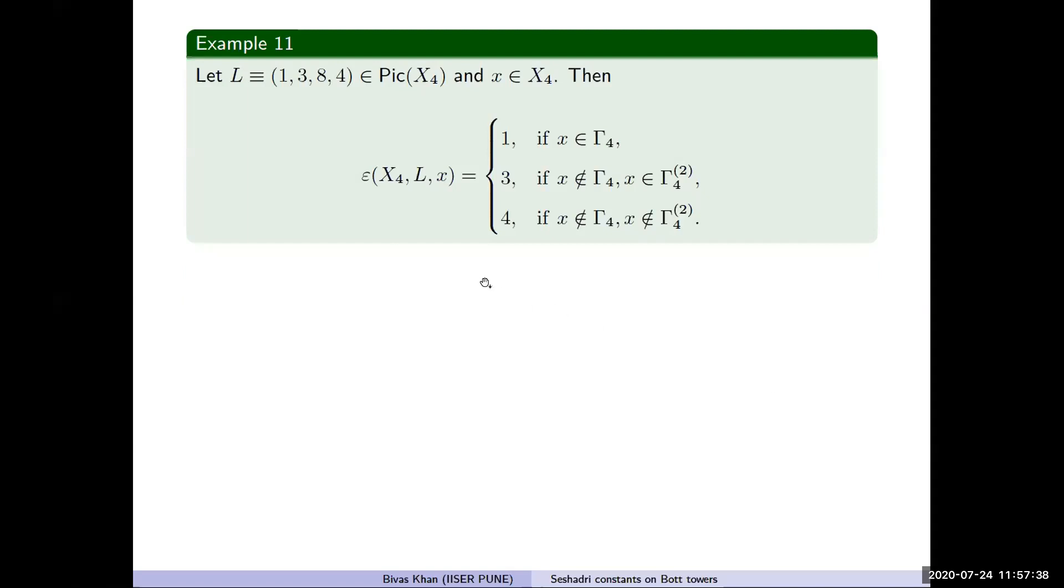Let me come to the final example, which illustrates our result. By repeated application of our results, we can explicitly compute Seshadri constants like this. If L corresponds to the divisor (1,3,8,4), then depending on which curve x belongs to, we can get the Seshadri constant as 1, 3, and 4. I'll stop here.